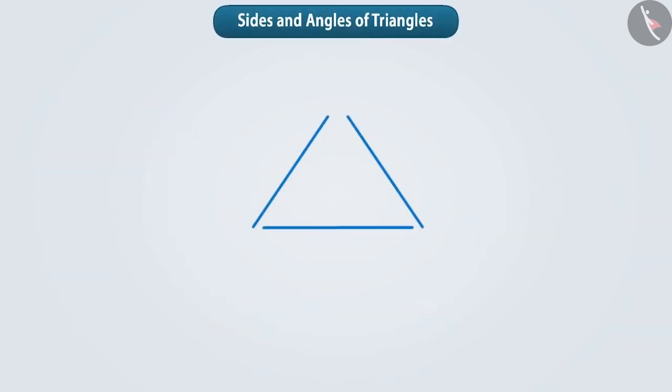Let us join 3 line segments and make a triangle like this. These line segments are called its sides. The point at which 2 sides of a triangle meet, that point is known as a vertex. Any triangle has 3 vertices.